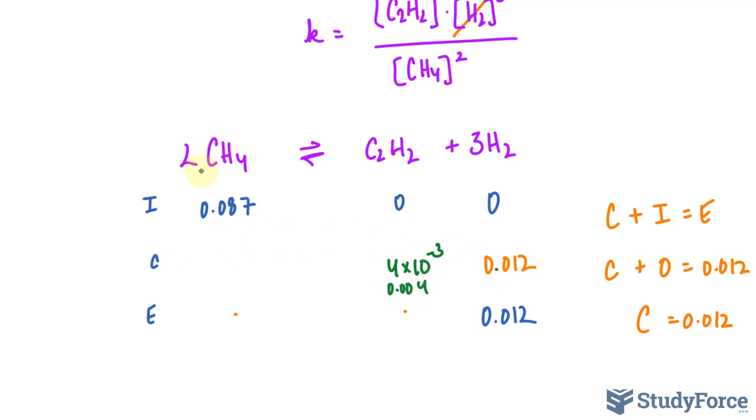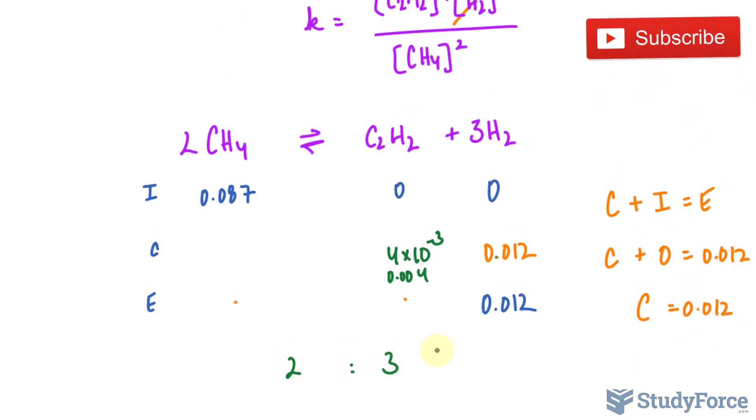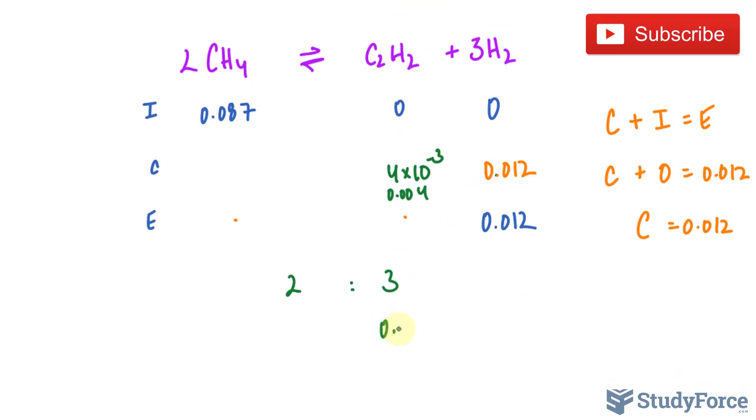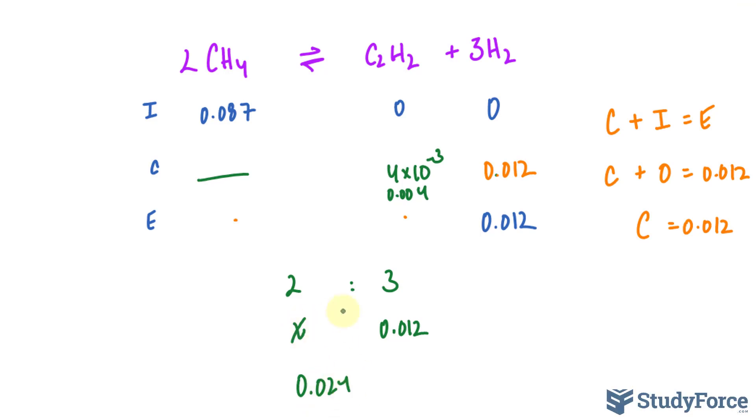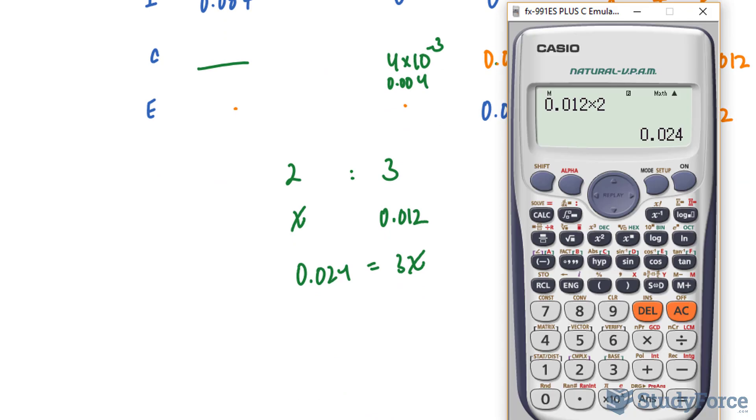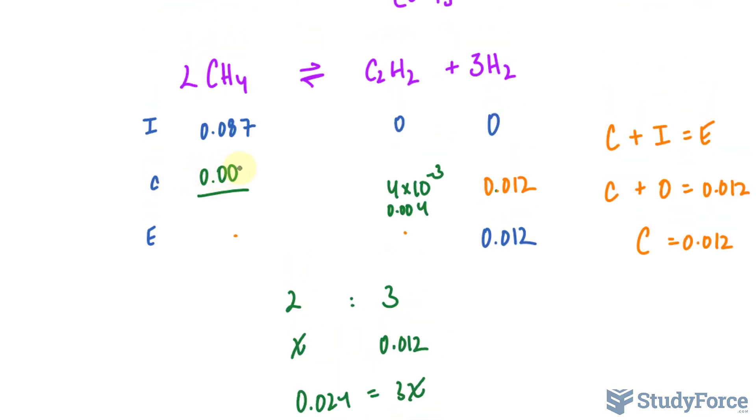And also to compare this to CH4, you can create a simple proportion here: 2 to 3, that relates the coefficients, and this number here was 0.012, and we're looking for this one, which we'll call X temporarily. So cross multiply, 0.012 times 2, we'll multiply that by 2, and we end up with 0.024. X times 3 equals 3X. We divide both sides by 3, so we divide this by 3, and we end up with X being equal to 0.008.